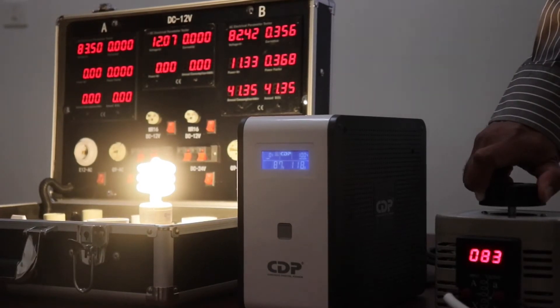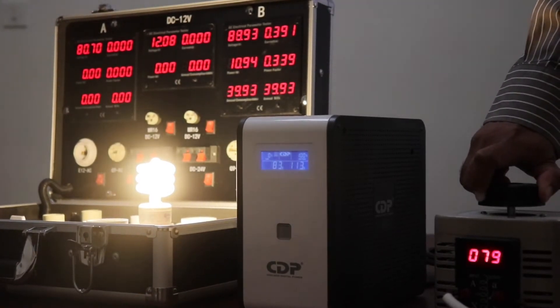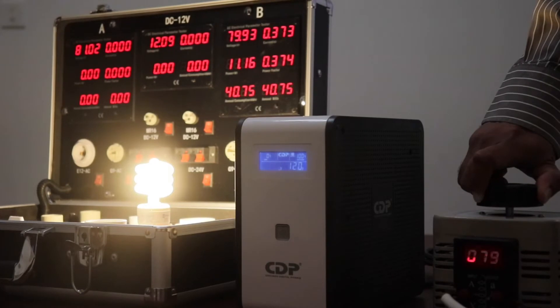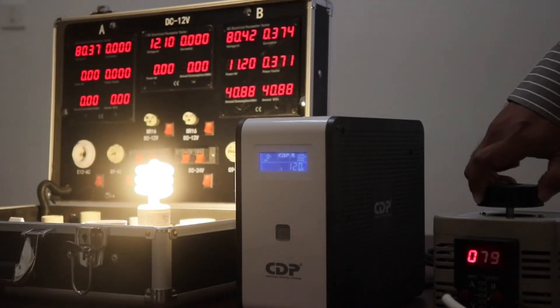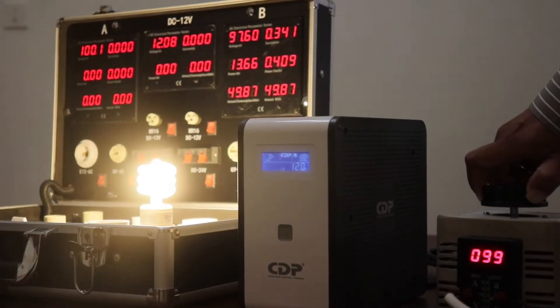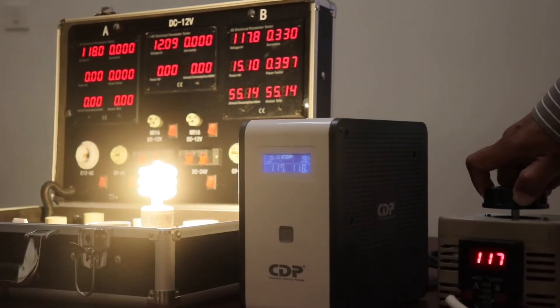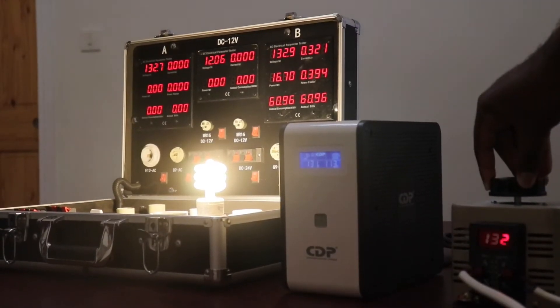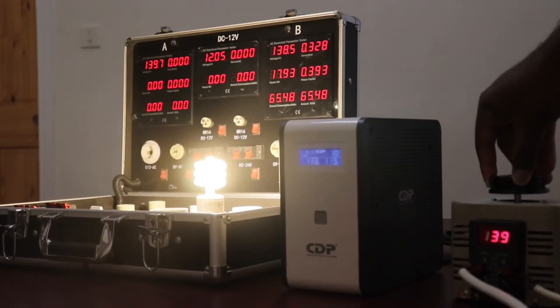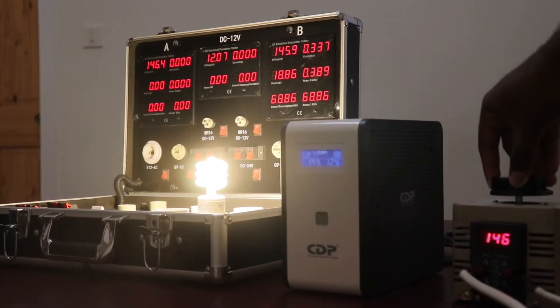In this case, the unit regulates the input voltage all the way down to 80 volts. Only then is the load, in this case the light bulb, switched to the unit's battery power. This feature helps to extend the life of the UPS while still providing the power that your devices require. Here, we have also demonstrated the UPS's ability to handle an over voltage situation.